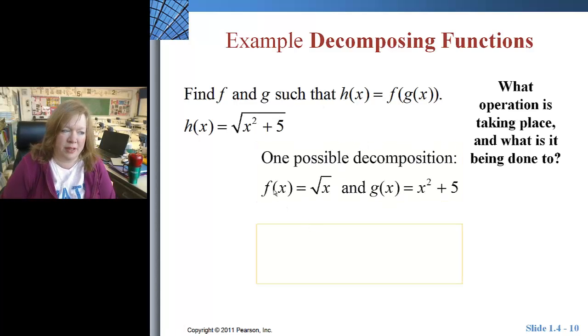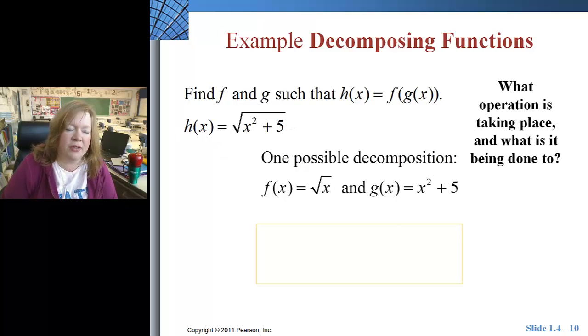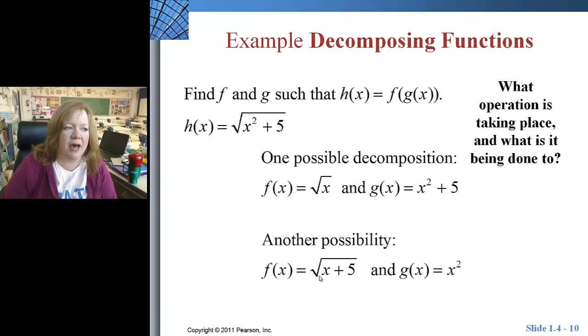one possible decomposition would be the square root of x and x squared plus 5. Because if I replace the x in this f of x, if I composed and did f of g, f composed with g, I would replace the x with x squared plus 5 and I would get this function h of x. Another thing you could do is you could have square root of x plus 5 and put in the x squared. To me that's not as intuitive as this.